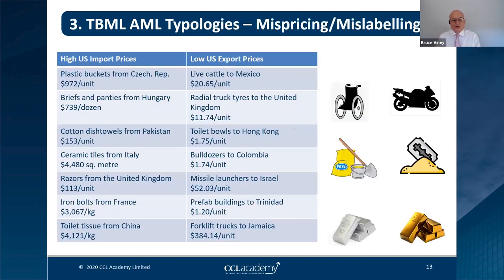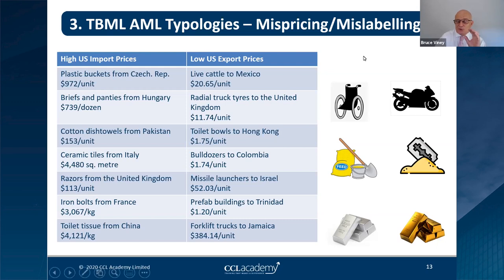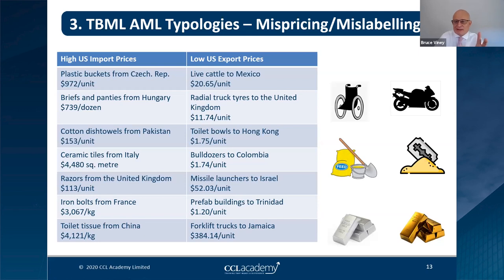There are examples of ridiculous pricing in real cases: plastic buckets sold for nearly $1,000 a unit; bulldozers exported at $1.75 a unit. One shipment declared as wheelchair gearboxes was destined for Lagos — a back-of-the-envelope check revealed that the volume would mean the entire population of Lagos was in wheelchairs. They were actually motorbike gearboxes, which attract higher import duties — an attempt to circumvent that.